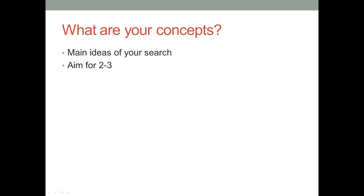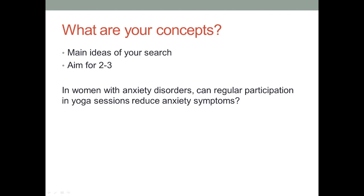So let's say I identified this as my research question. How many concepts are included here? I identified these three: women, anxiety disorders, and yoga. This is much more of an art than a science. You could have looked at this and identified different concepts, and that's okay. In your search, you're trying to pull out the concepts that are most important to you, or the things that you want to learn the most about.